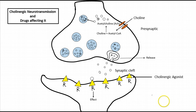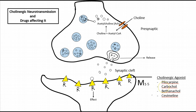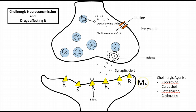Drugs that stimulate cholinergic receptors are called cholinergic agonists. Examples include pilocarpine, carbachol, bethanechol, and cevimeline. These drugs act mainly on muscarinic receptors, and hence the effects of cholinergic agonists are the same as those of the parasympathetic system.